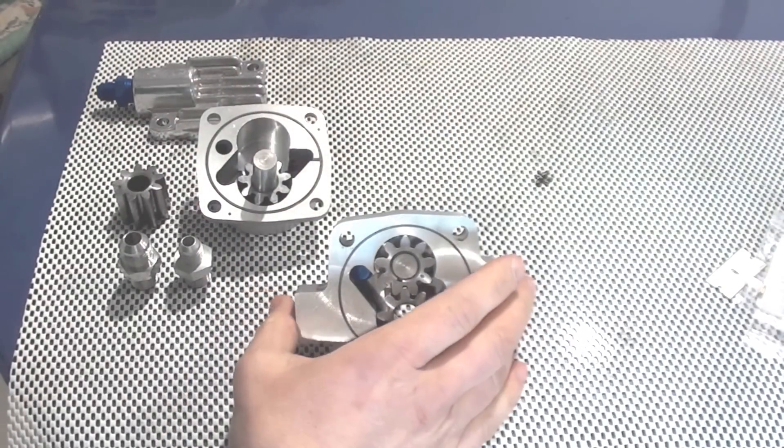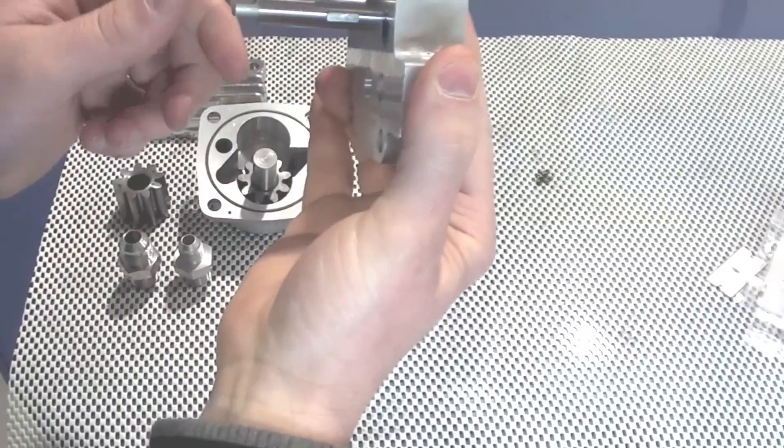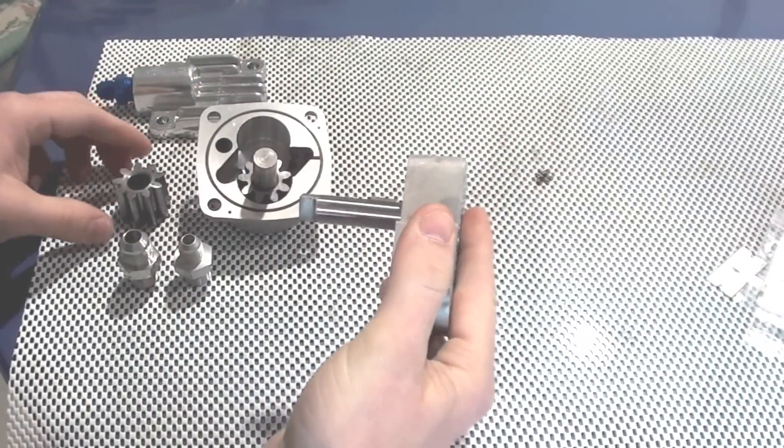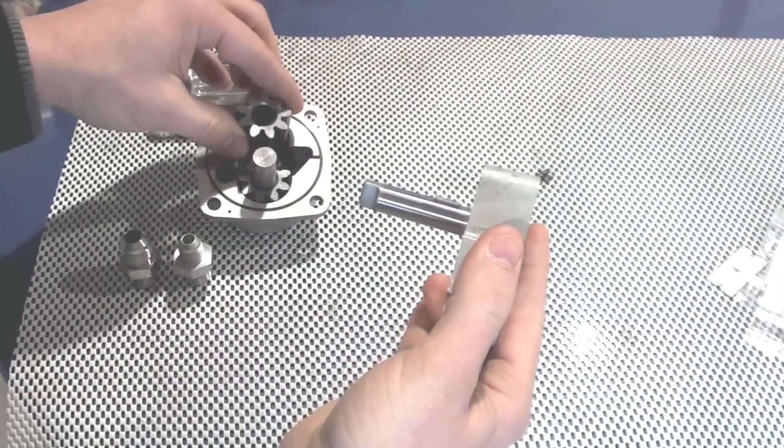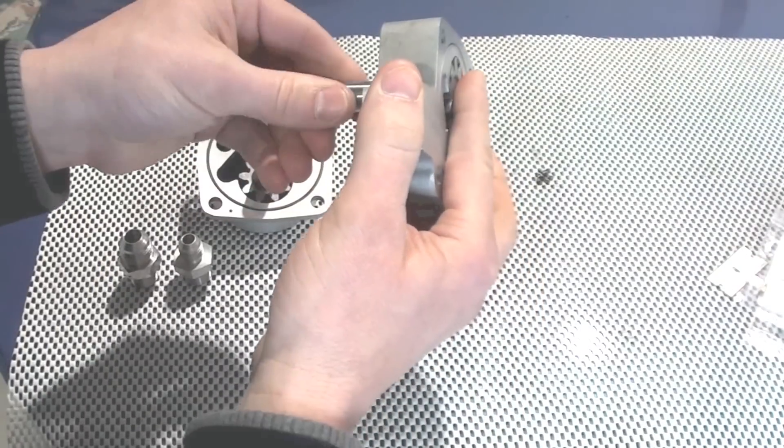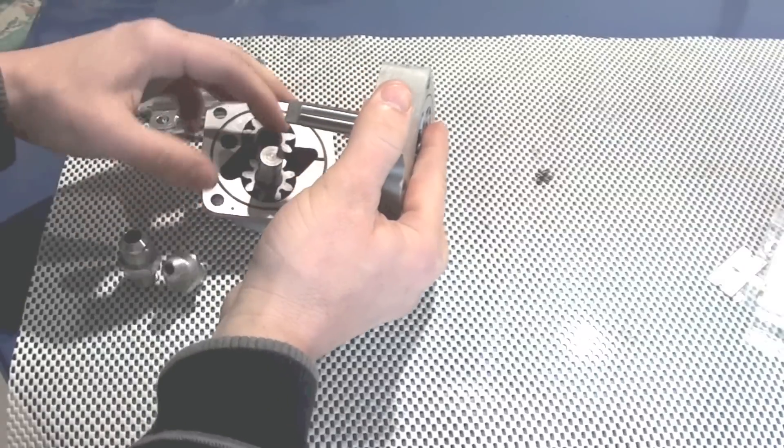Putting the pump together is actually pretty simple. You've got a shaft that runs through and a gear that sits on that keyway. Assemble the two, align the key with the keyway on the gear.